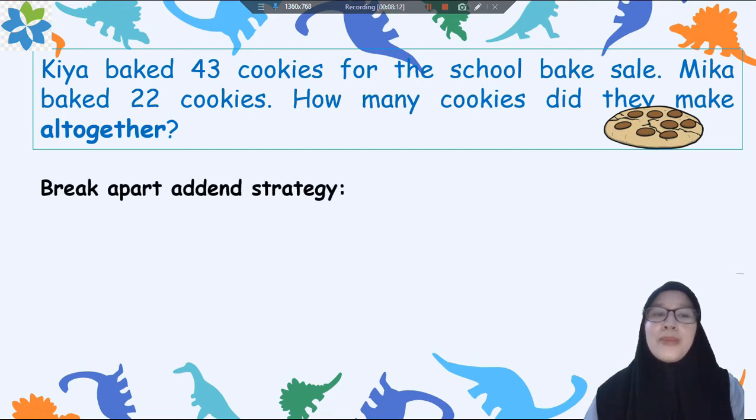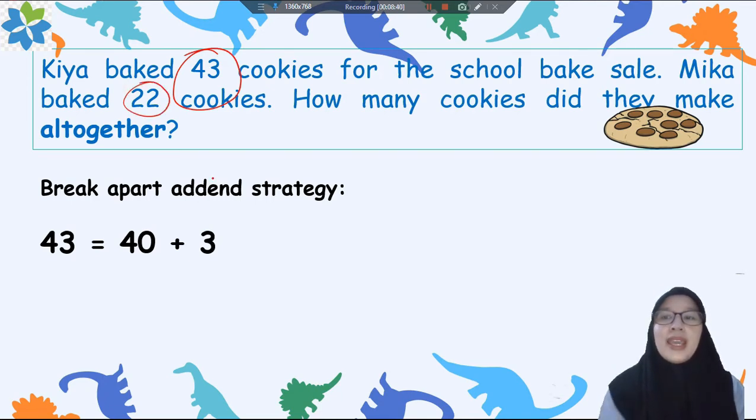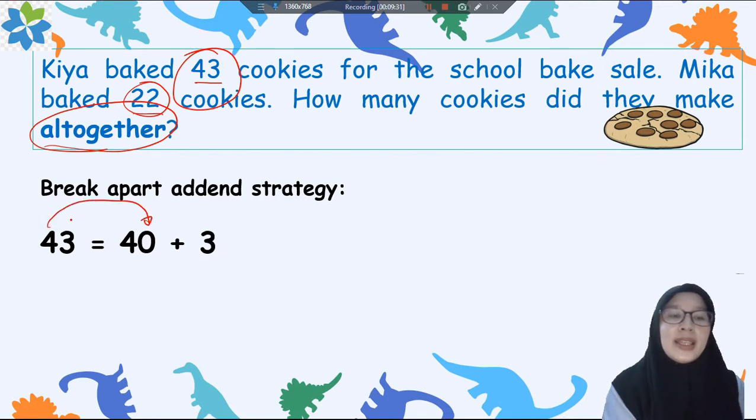First after you read the problem, let's try to use another way to solve this problem. I will show you the break apart added strategy. Ini ada cara yang lain lagi yaitu dengan cara memisahkan bagian per bagian. First we'll find 43 and 22 right? And find the keywords of the problem. The keyword is all together, it means that the problem is about addition. Jadi kita sudah menemukan kata kuncinya ada all together, maka ini artinya soalnya adalah soal tentang penjumlahan. The numbers that we find in the problem are 43 and 22. First please break apart 43 into the tens and ones. Jadi pisahkan 43 ini menjadi puluhan dan satuan. 4 disini artinya 40 right? And then 3 disini artinya ada 3 satuan.